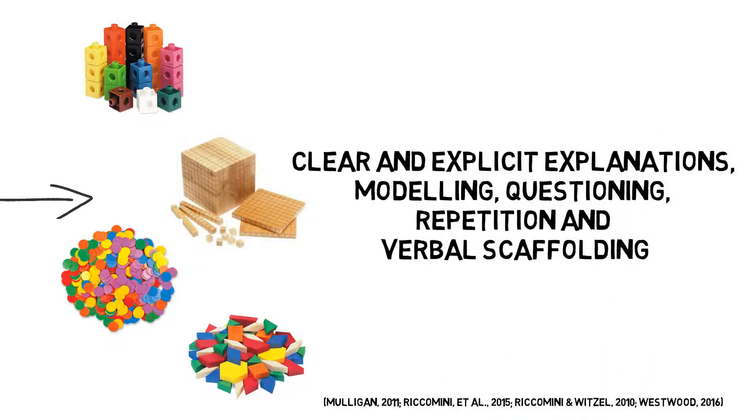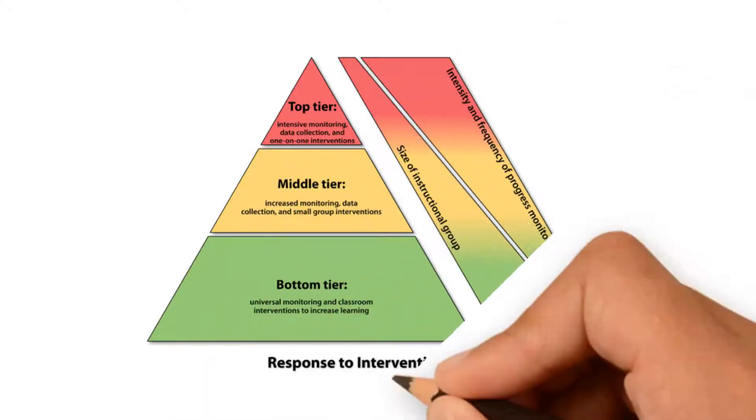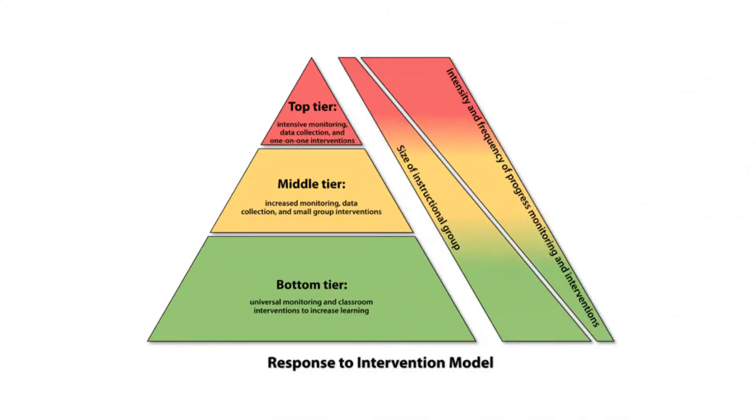Of course, students will show a range of difficulties in their results, so how can students with mathematical learning difficulties be supported to succeed? The response to intervention model for mathematics is often employed in schools to provide all students with high-quality instruction through systematic evidence-based strategies.